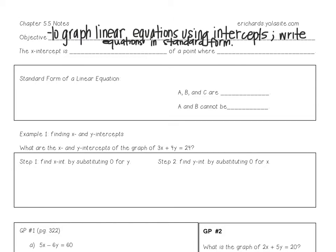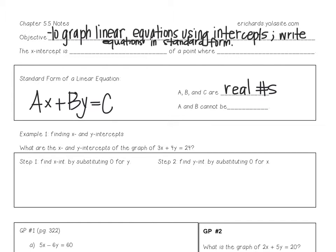The standard form of a linear equation is written Ax plus By equals C, where A, B, and C are real numbers, and A and B cannot both be zero.